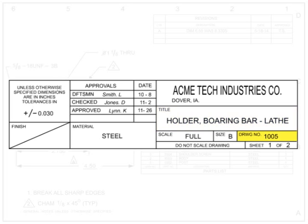The drawing number gives the drawing a unique identifier as a standalone document. Older drawings sometimes use the part number as the drawing number, which is considered bad practice in modern drawing standards. In modern standards, document numbers such as drawing numbers should remain separate from part-identifying numbers. However, drawing numbers can be incorporated into part-number sequences by simply adding an extra digit to the end of the drawing number.